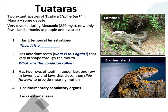Acrodont teeth vary in shape — the ones in the front of the jaw look different from the ones in the back, so we call this condition heterodonty; they exhibit a heterodont condition. Their tooth arrangement is quite interesting: they have two rows of teeth on top — one row of front teeth and one row behind it — and one row on the bottom jaw.